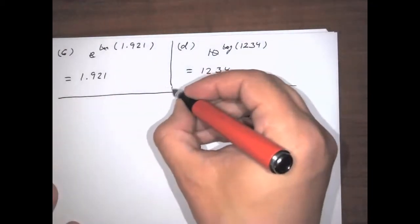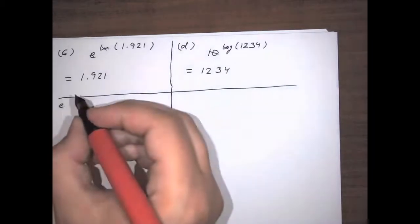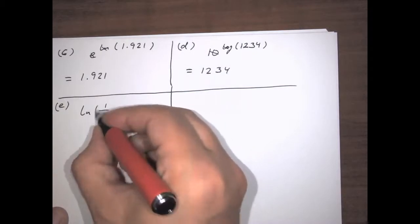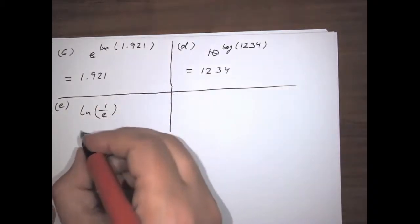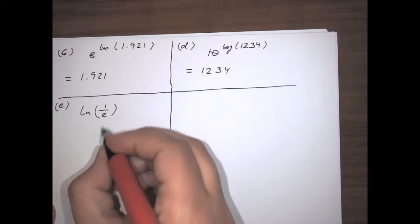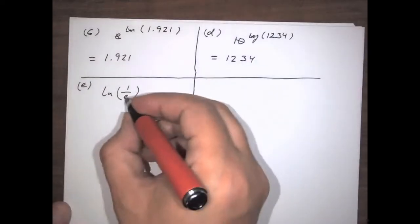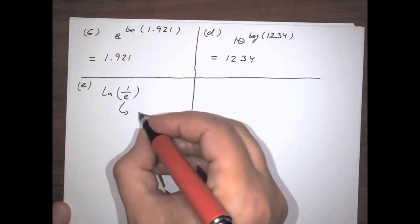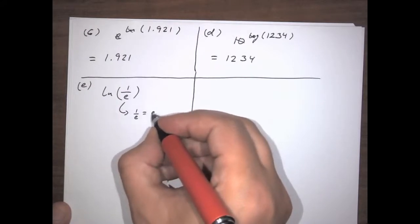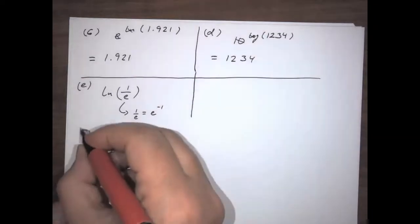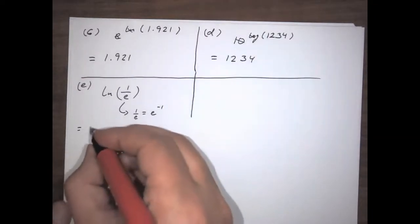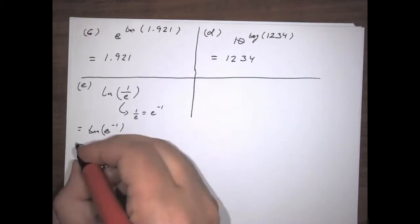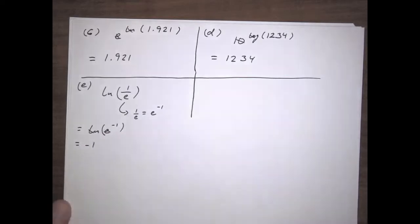Maybe we could have something like the natural log of 1 over e. When you look at this, you have to try to figure out how this can be written so that it is e to some power. Well, 1 over e is the same as e to the negative 1. So the expression is the natural log of e to the negative 1, which then cancels, giving negative 1.